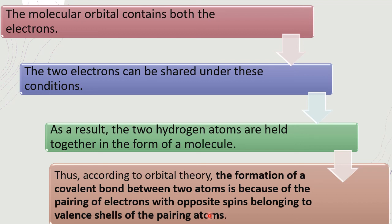In this way, covalent bond is formed by the overlapping of atomic orbitals, and what is formed here is the molecular orbital. Today, we have discussed overlapping of atomic orbitals by taking the example of hydrogen. In tomorrow's class, we will discuss what type of bonds are formed after atomic orbital overlap and how they form. Thank you, my dear students.